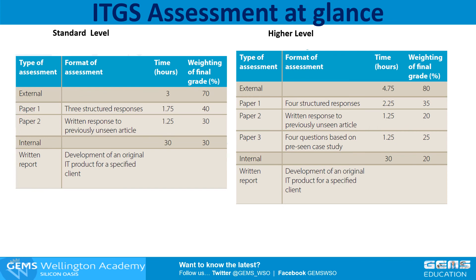Here is the breakdown of the weightage of each paper students are going to sit at the end of this course. SL students will be sitting for two exams and HL will have three exams. This is in addition to the internal assessment that both will complete. The weightage of internal assessment is 30% for SL and 20% for HL.